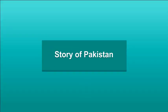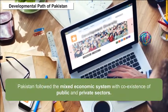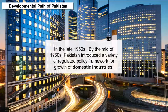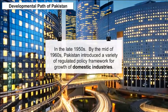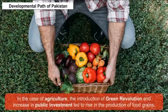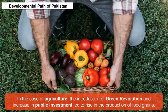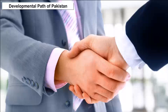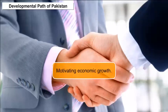Story of Pakistan — Developmental Paths: Pakistan followed the mixed economic system with coexistence of public and private sectors. In the late 1950s to mid-1960s, Pakistan introduced a variety of regulated policy frameworks for the growth of domestic industries. In agriculture, the introduction of the green revolution and increased public investment led to a rise in the production of food grains. During this period, Pakistan also received financial support from Western nations, which helped the country in motivating economic growth.